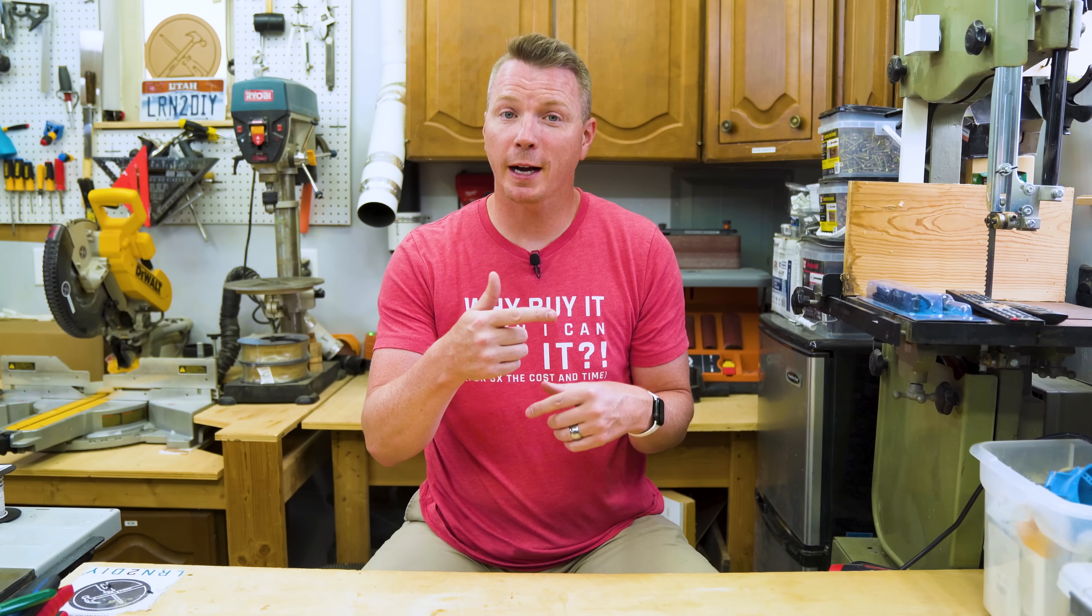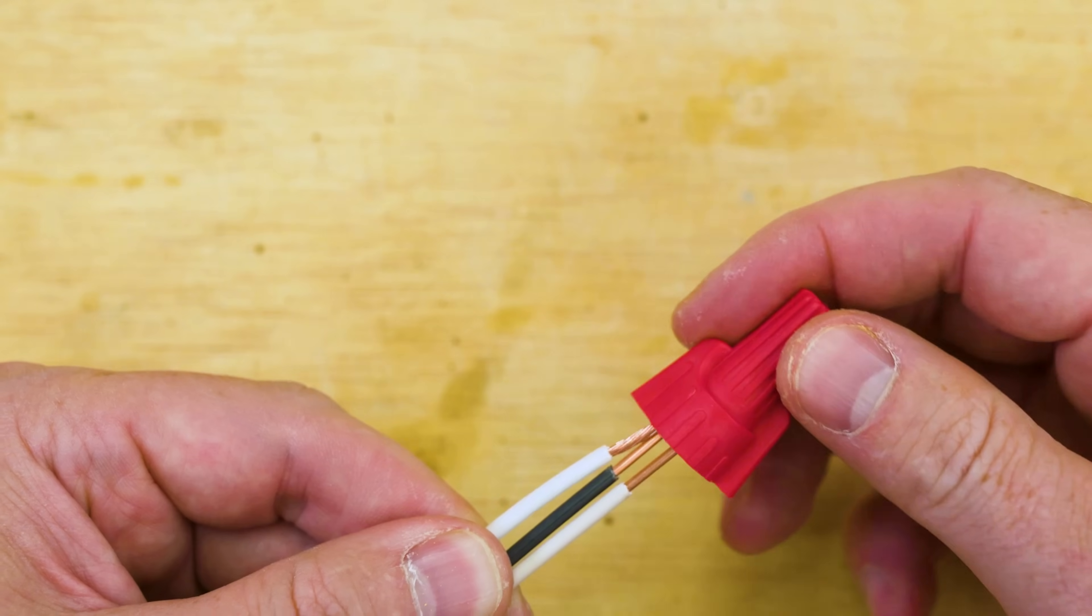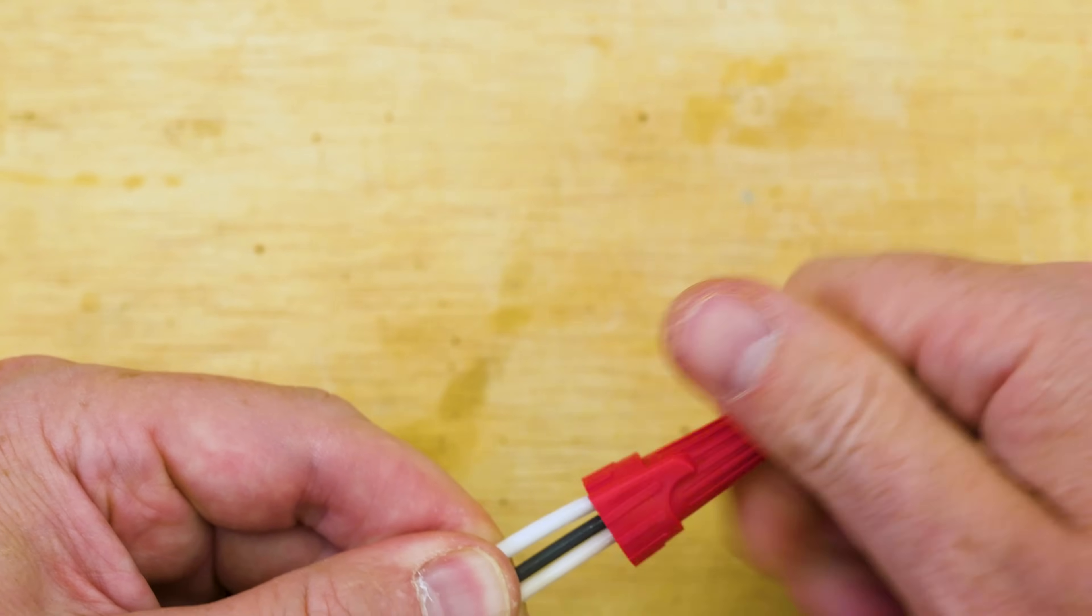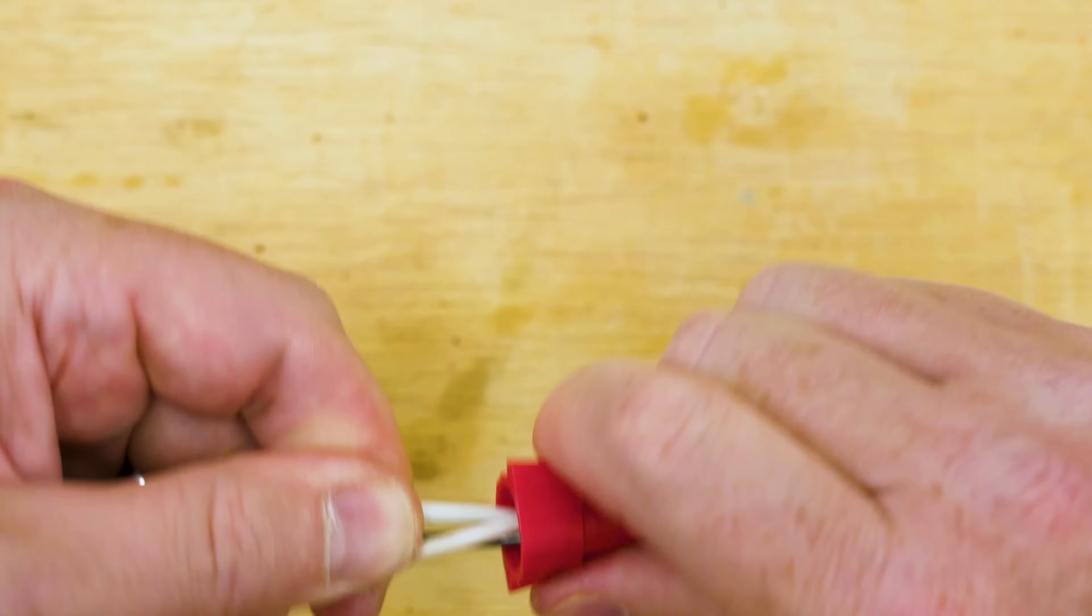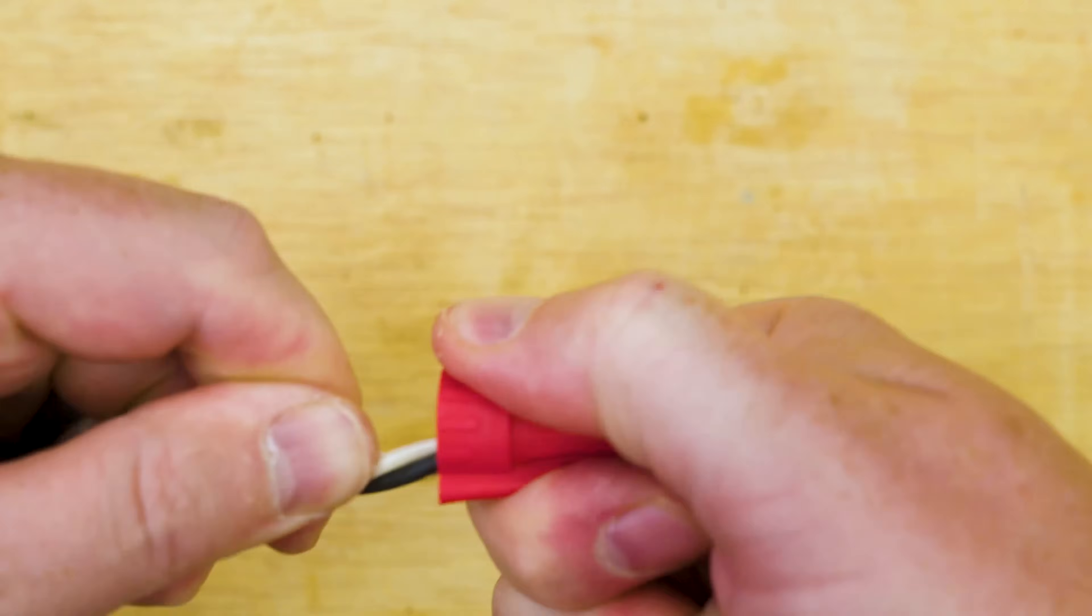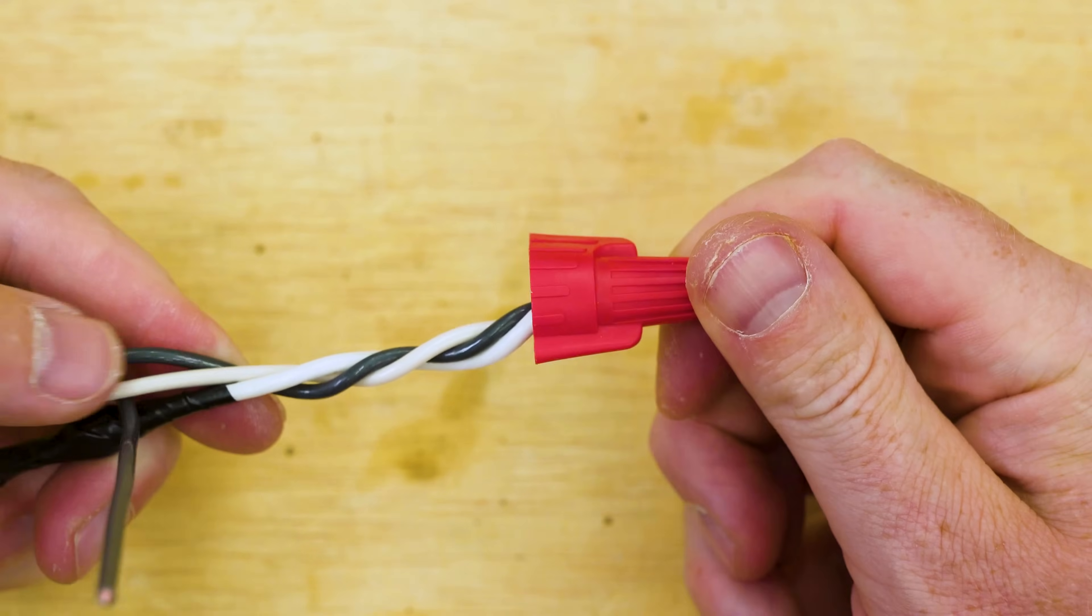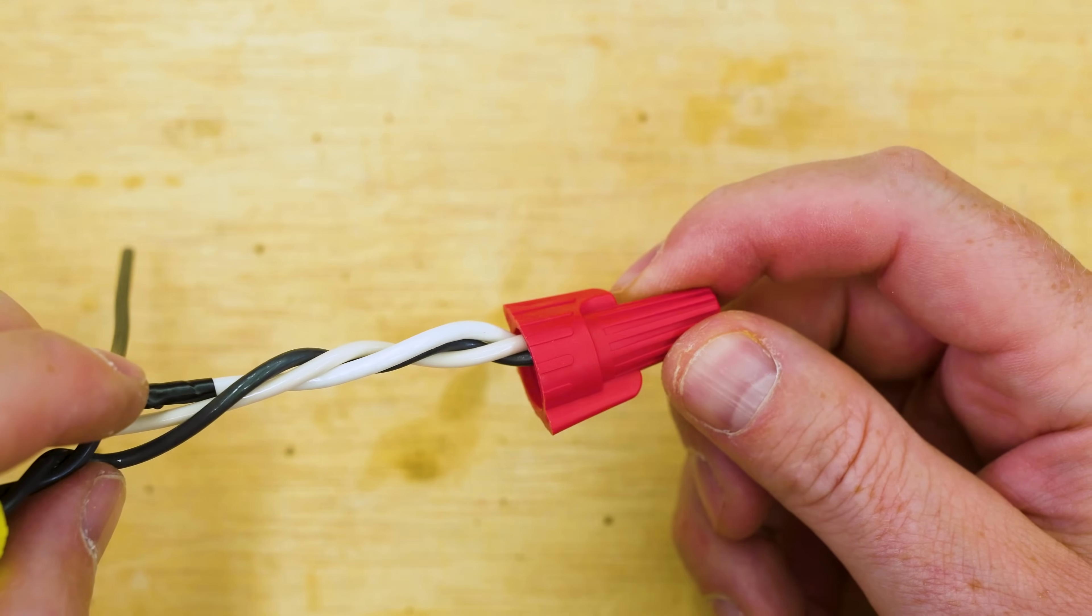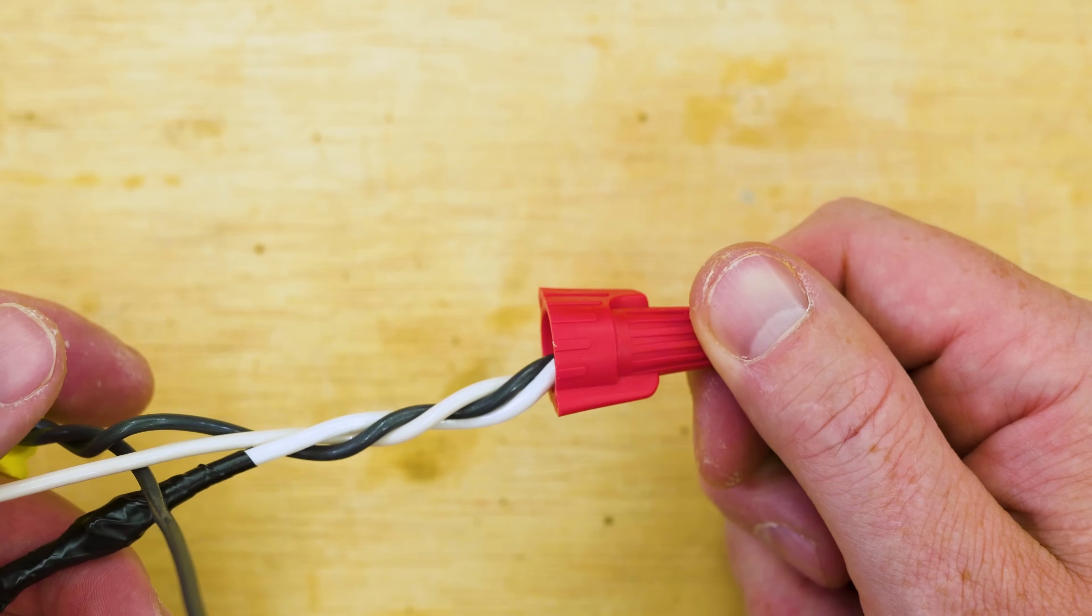Now one quick tip for working with combinations of solid wire and stranded wire is that you actually want to have the stranded wire stick out a little bit further than the solid wire. That helps the wire nut to actually wrap it all the way around and it kind of twists it around so that it makes a better and more solid connection. If you put them at the same length, then what tends to happen is that stranded wire doesn't have enough chance to bite and grab on and then it's easier just to pull out, which is obviously not what you want.